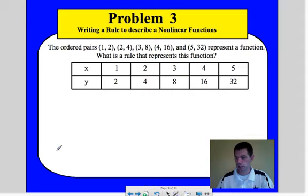Okay, so problem number 3 here is talking about writing a rule. So here's the information we have. We went 1 to 2, 2 to 4, 3 to 8, 4 to 16, and 5 to 32. So the question becomes, well, how do I get from each point to the next point?